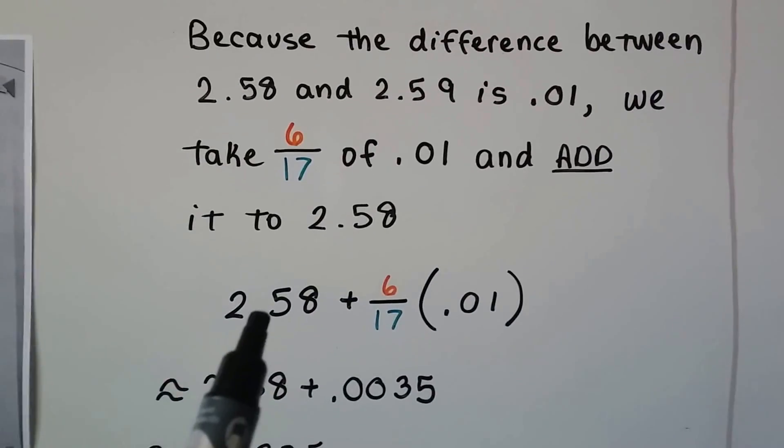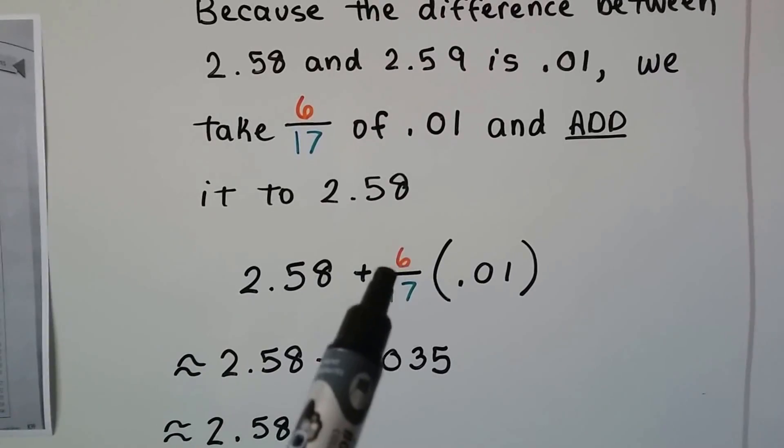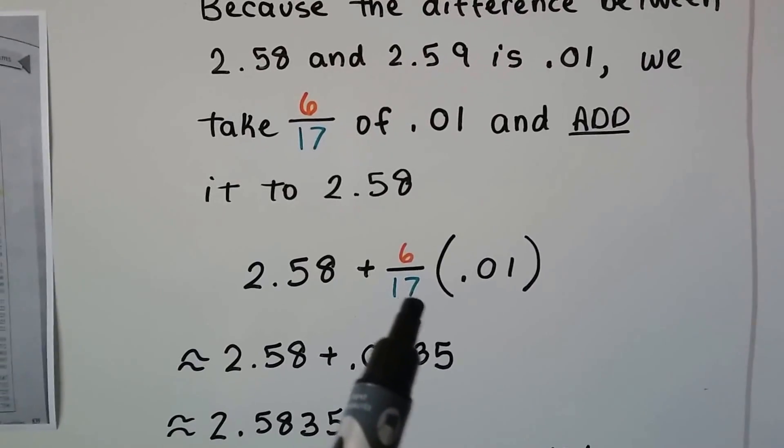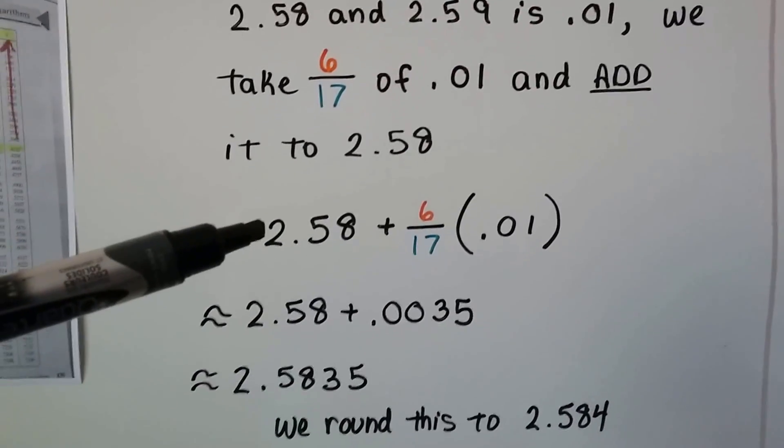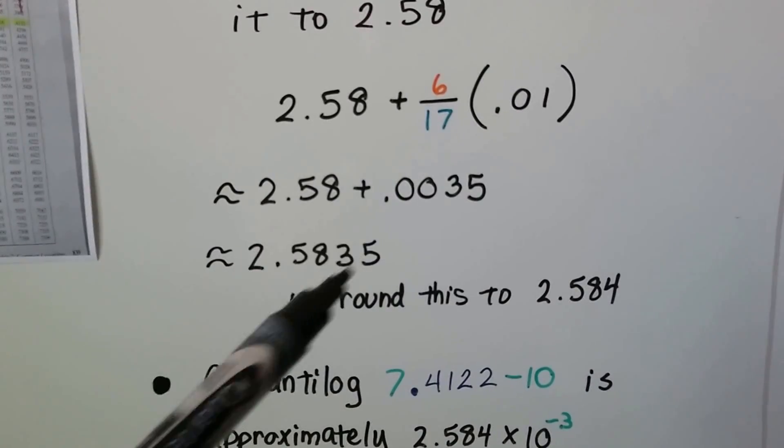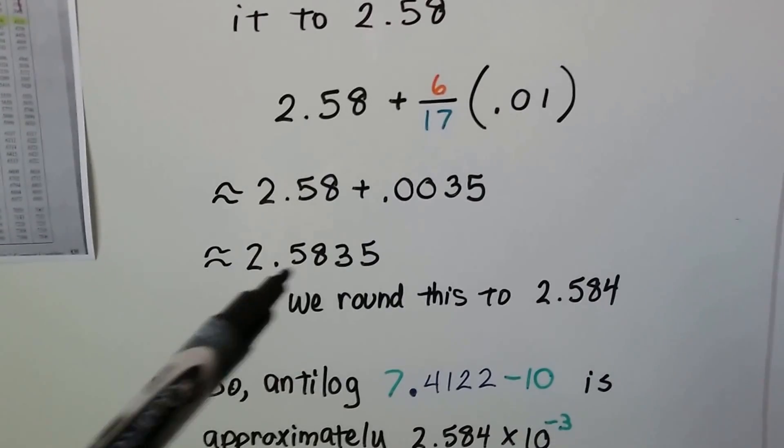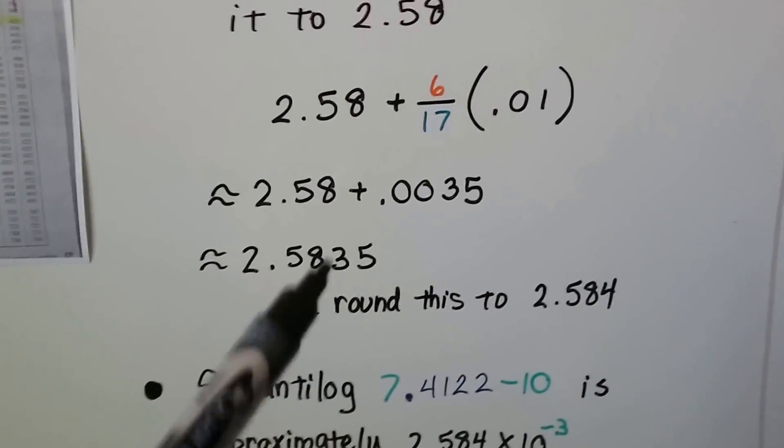So, we do this first and we get a .0035. You can actually put 6 divided by 17 times .01. And we're going to add it to 2.58 and we round this. This is our approximate amount. There's too many digits here. So we're going to round this and this 5 is going to tell that 3 to go up to a 4.